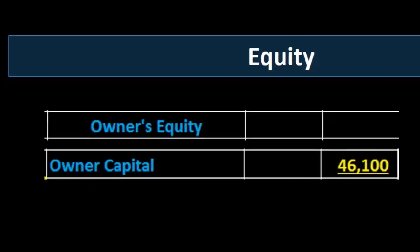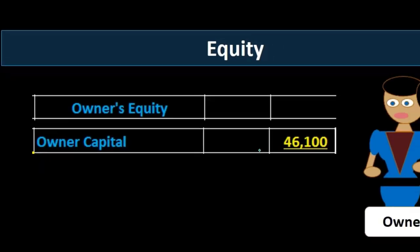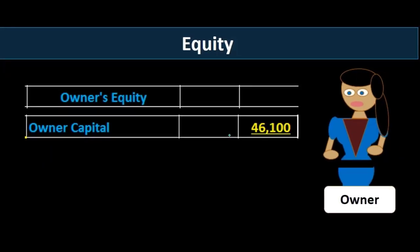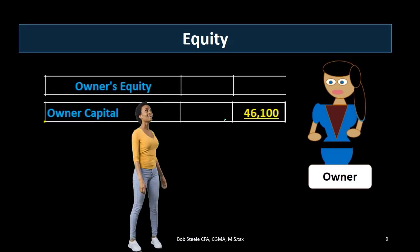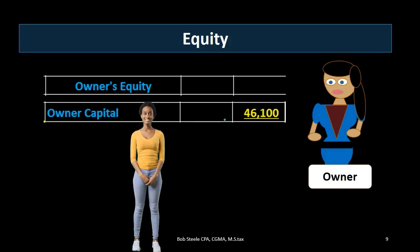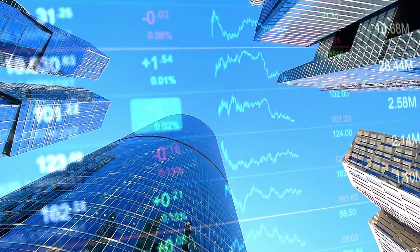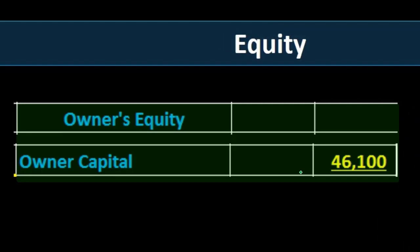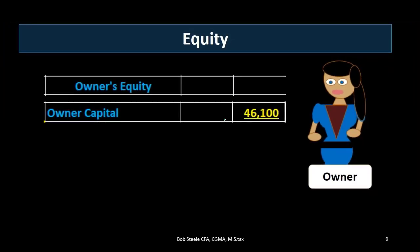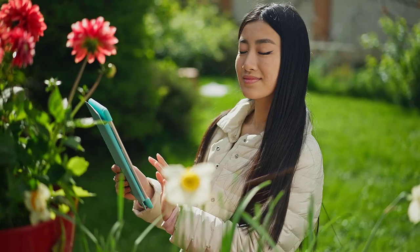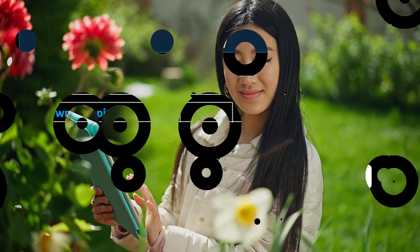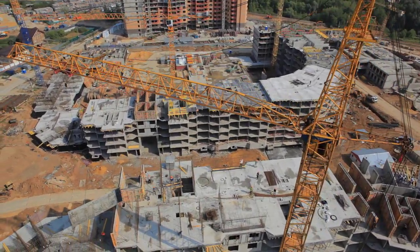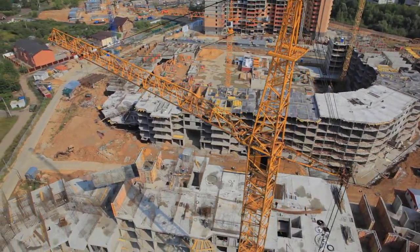The equity section represents the amount owed to the owner — $46,100 — which can be calculated as total assets minus total liabilities. In real life, this number comes from the transactions entered into the system and the trial balance generated from that data. Shortly, we will get into recording transactions, posting them, building the trial balance, and then constructing the balance sheet. For now, we are examining the components of a fully completed balance sheet.